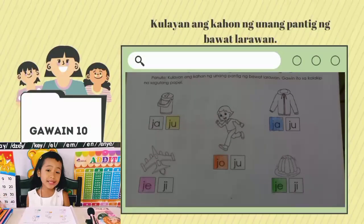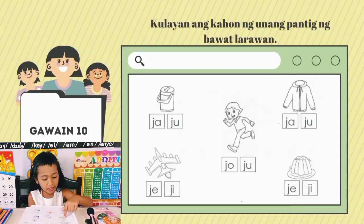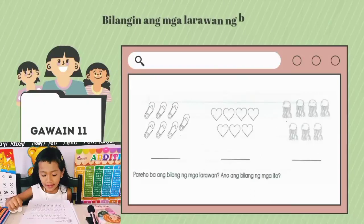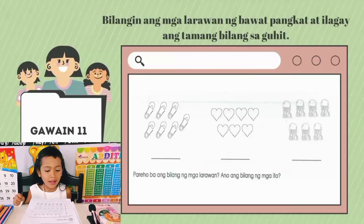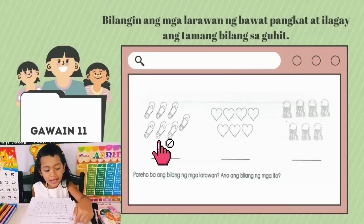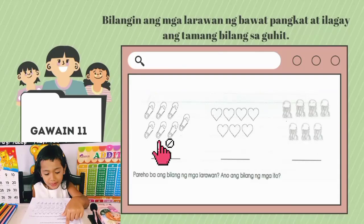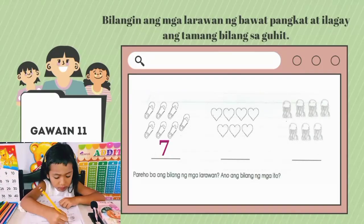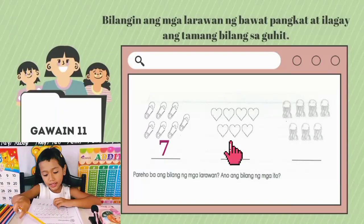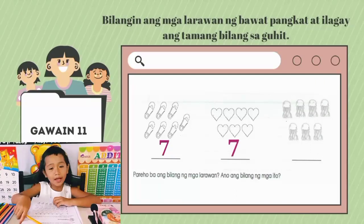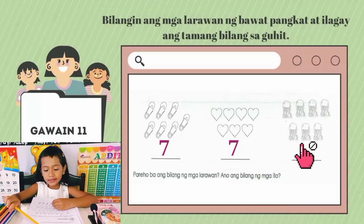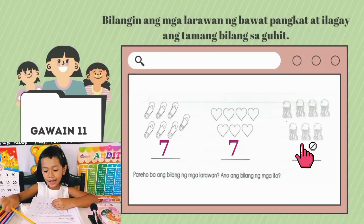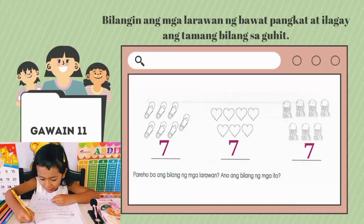Ang unang pantig sa mga salitang nagsisimula sa letrang J. Bilangin ang mga larawan ng bawat pangkat at ilagay ang tamang bilang sa kahon. Bilangin natin ang unang larawan: isa, dalawa, tatlo, apat, lima, anim, pito — pito. Sunod na larawan: isa, dalawa, tatlo, apat, lima, anim, pito — pito rin ang isulat natin. Huling larawan: isa, dalawa, tatlo, apat, lima, anim, pito — pito rin ang isulat natin.